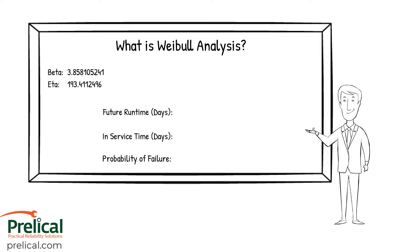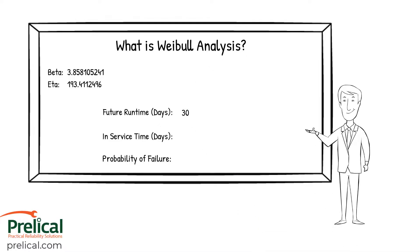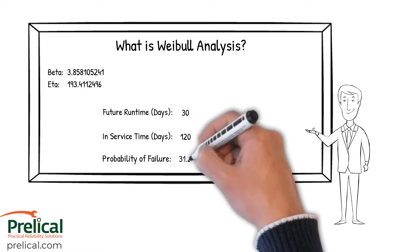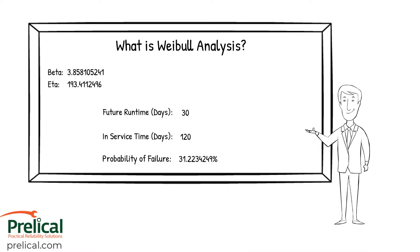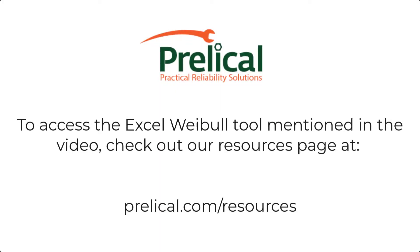One of the great things about a Weibull analysis is it allows us to look into the future and determine what the probability of failure is based on previous performance. For example, say we've got a pump and it's been running for 30 days, and the boss wants to know: will it make it another 120 days before our next outage? If we run the math, it shows there's a 31.22% chance of having a failure between now and 120 days from now, considering the fact that we've already run for 30 days. Check out our website at prolacle.com/resources to find the Excel Weibull tool mentioned in this video.